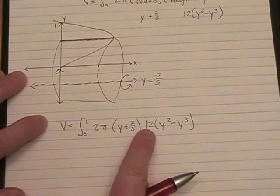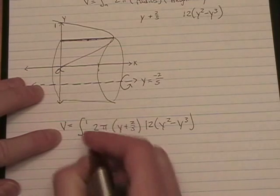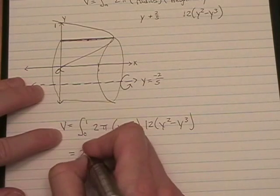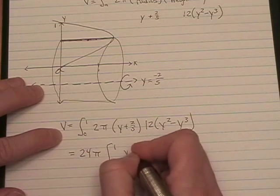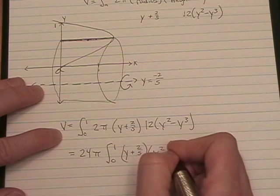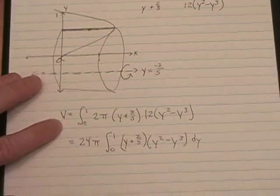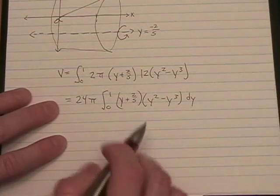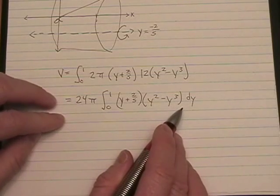Now, we can take 24 pi out in front, and it gives us a little easier integral to deal with. We are going to have to use one of my favorite f-words, FOIL, to simplify this, and then it will just be a power rule.